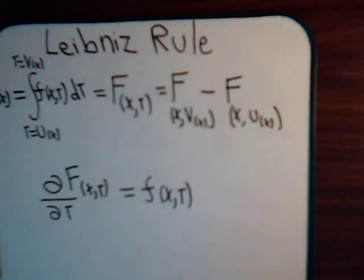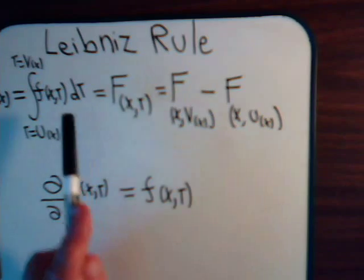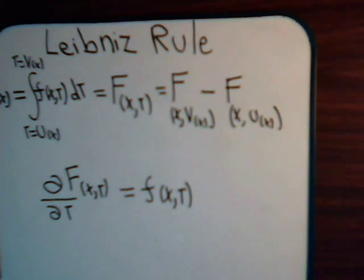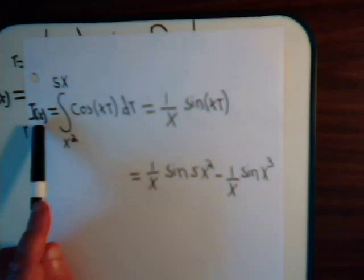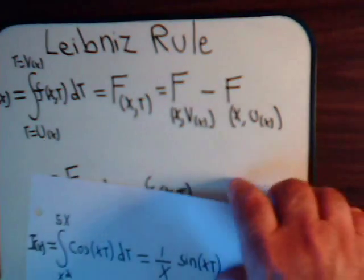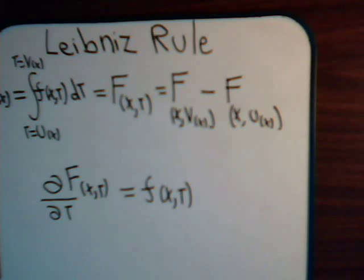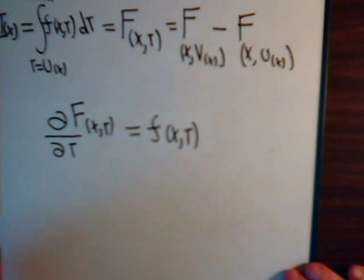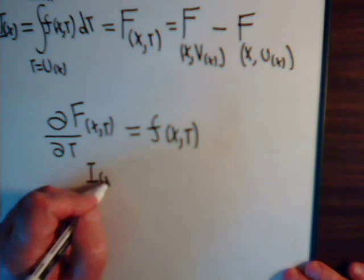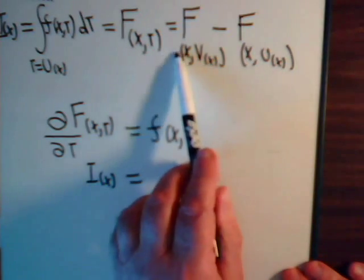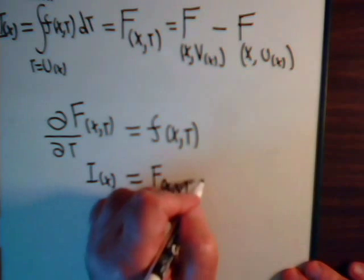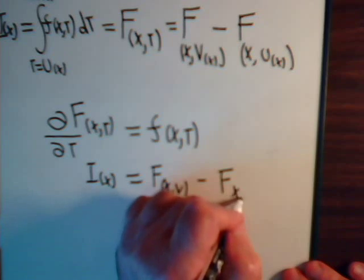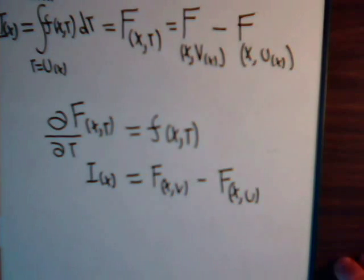Notice again that when we have this type of integral, it eventually gives us some function of x, just as we saw right here. So integrals of this form are written more generally as just I(x). Now let's consider I(x) equals this integral. What happens if we take the partial of I(x) with respect to v?